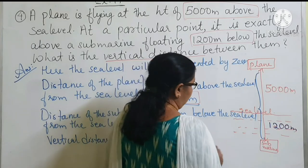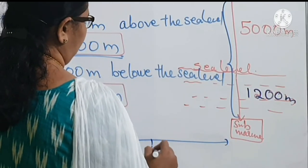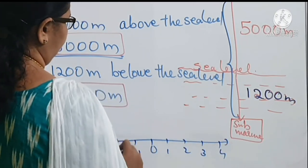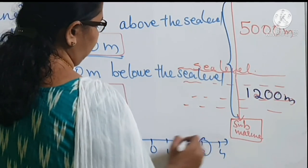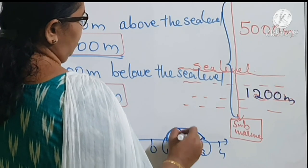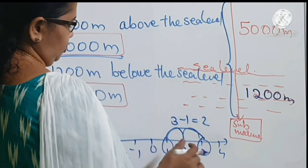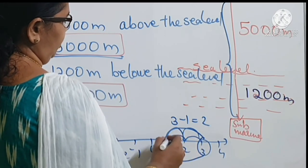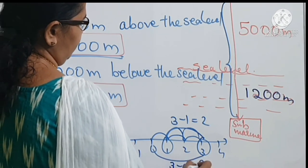On a number line with points 0, 1, 2, 3, 4 — the distance between 3 and 1 is 2 units, that is 3 minus 1 equals 2. The distance between 3 and 0 is 3 units, that is 3 minus 0 equals 3.